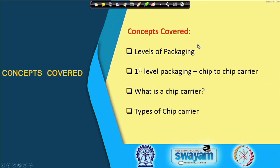Today we will briefly discuss the levels of packaging and then go straight to first level packaging. First level packaging involves what is called chip-to-chip carrier, which immediately raises the question of what is the chip carrier and what are the different types of chip carrier.